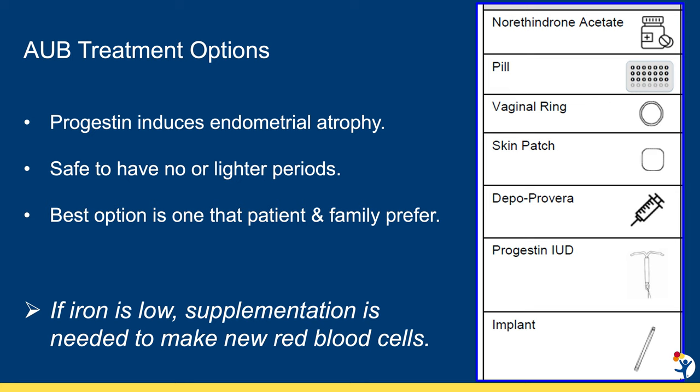All of these methods can be used effectively to reduce periods or stop them entirely. Menstrual suppression is safe with hormonal therapy because the lining of the uterus is not building up. We find that spending time explaining how these methods work and giving patients and families lots of different options really improves satisfaction with their treatment. And even though today we're focusing on heavy bleeding, hormonal therapy is also incredibly effective for treating other conditions like dysmenorrhea, menstrual-related headaches, seizures, mood changes, or anything made worse by periods.